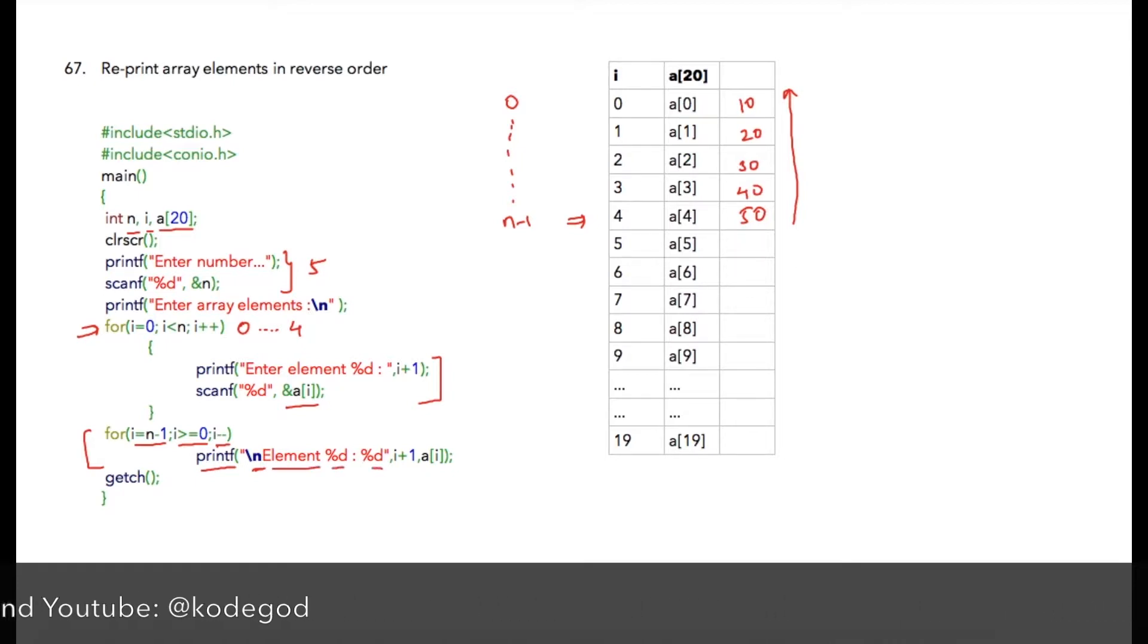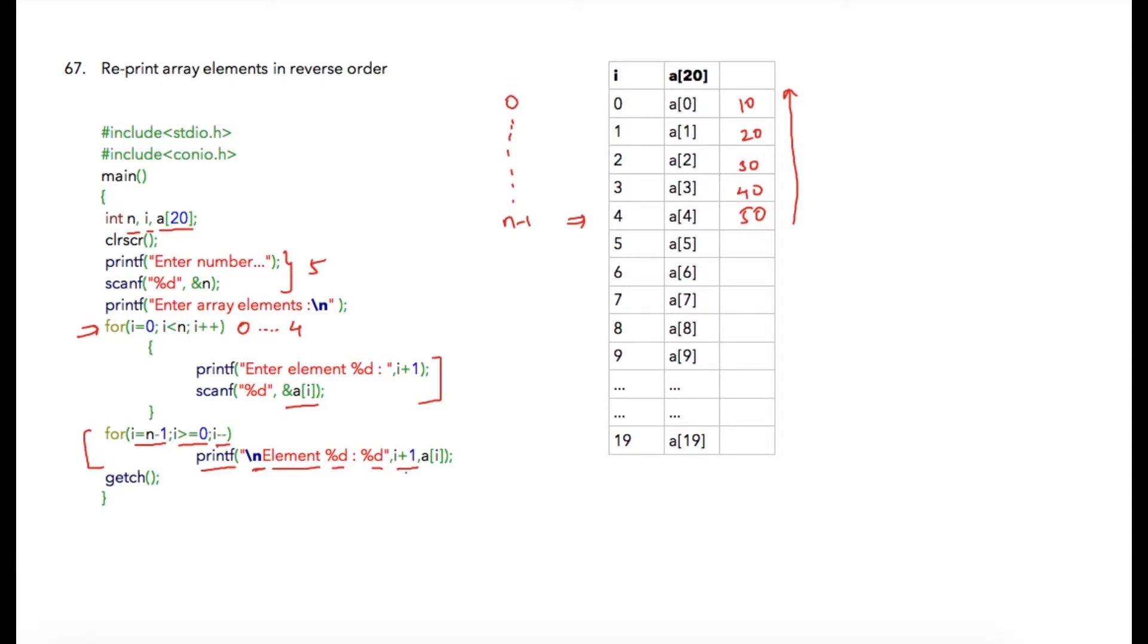The string is printed as element percent d colon percent d. There I am going to print first parameter as i plus one so i plus one will be replaced over here and a of i which is array element will be replaced over here. Output will be something like this: first value is n minus one so that is four.